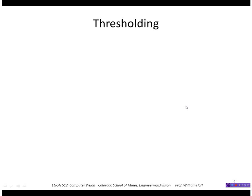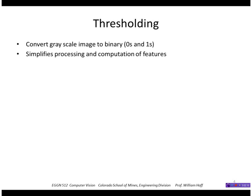So first let's talk about thresholding. Thresholding is a process where we convert a grayscale image to a binary image. This simplifies processing and computation of features. We can use a single threshold value, basically a global thresholding technique, or a local value depending on where we are in the image which is called an adaptive technique.